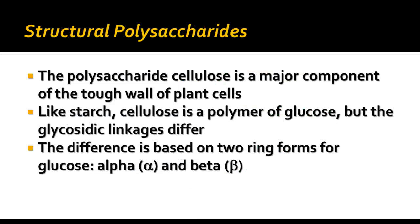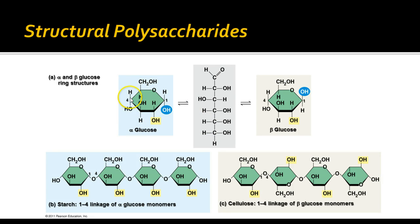We also have structural polysaccharides. One we talk about a lot is cellulose, the component of the cell wall of plant cells. It is also a polymer of glucose, but with a different kind of glycosidic linkage, based on the two ring forms of glucose: the alpha ring and the beta ring. In alpha glucose, the hydroxyl group is in one position on the first carbon, and in beta glucose, the hydroxyl group is in a different position on the first carbon.